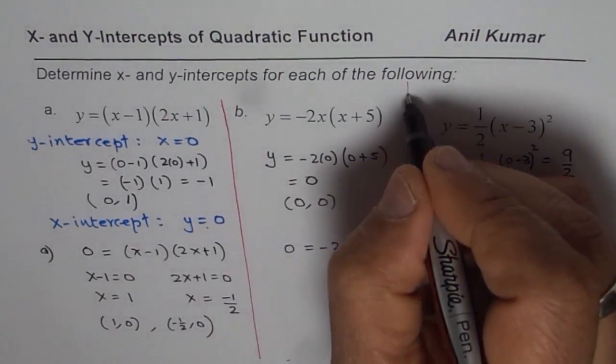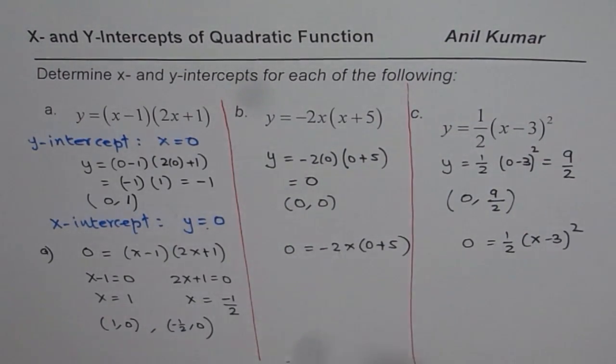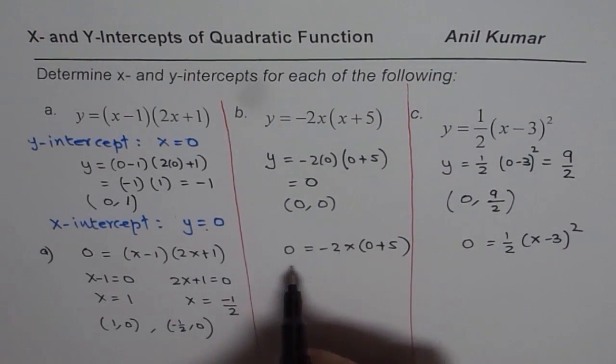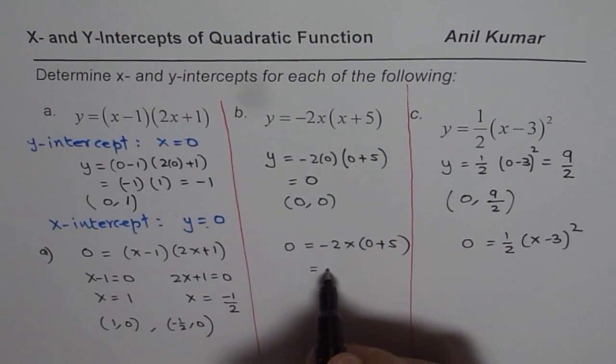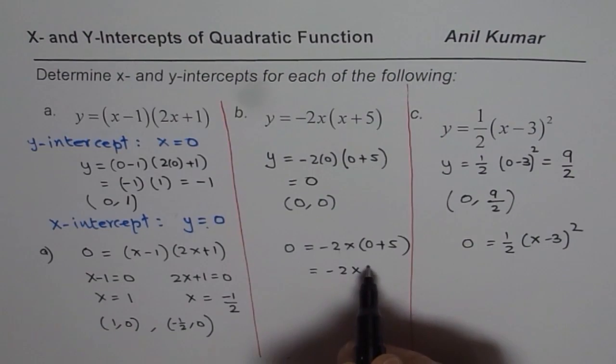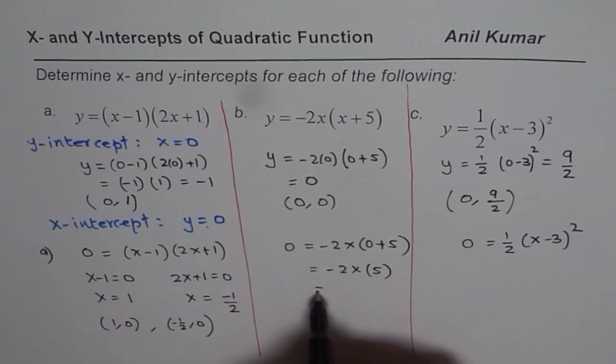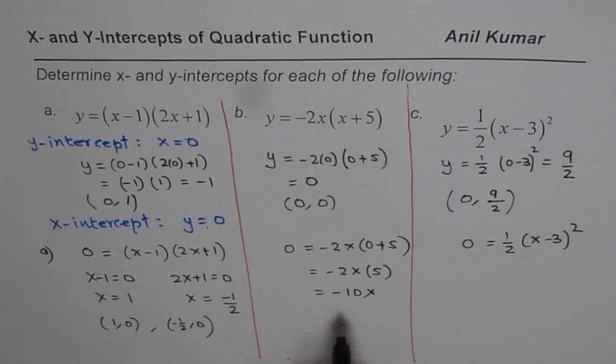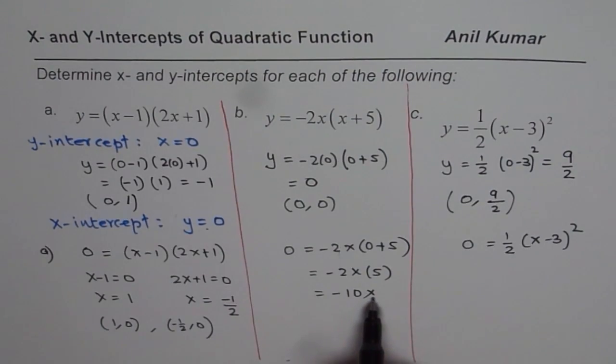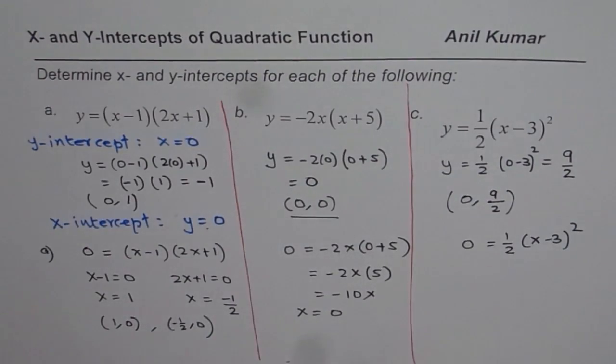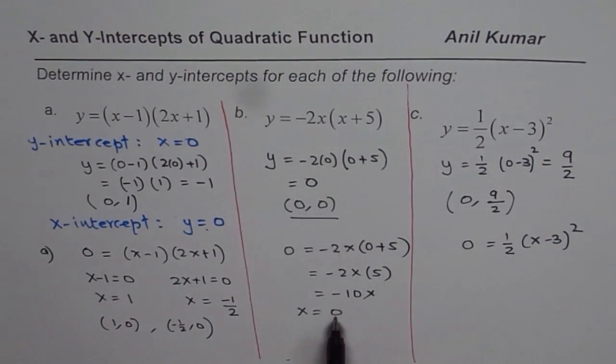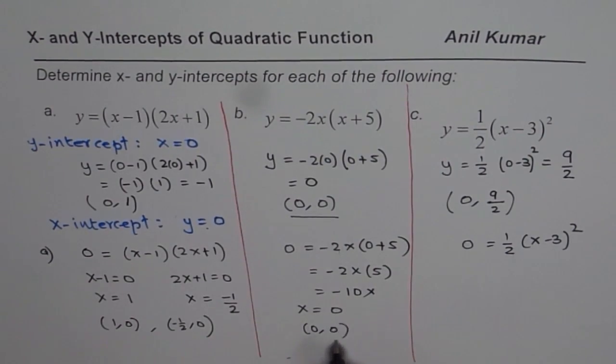Now in this case, if I substitute, now this is 5. Let me write this as minus 2x times 5 or minus 10x. Now that clearly indicates that x should be 0. So x is equal to 0, we already had y-intercept at origin, that means x-intercept is also at origin. So the x-intercept is also at origin.